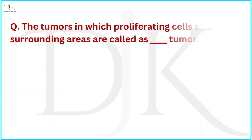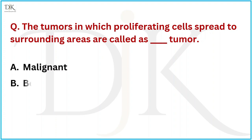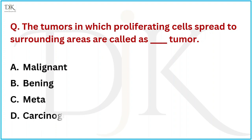The tumours in which proliferating cells spread to surrounding areas are called what type of tumour? The right answer is Malignant.